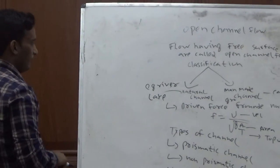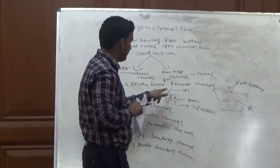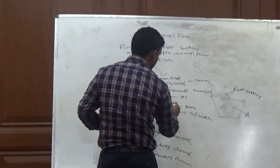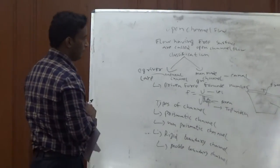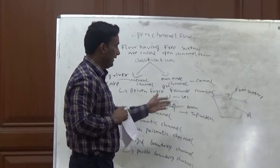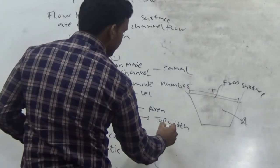The Froude number is used for classification of flow. This is represented by V over the square root of gA/T, where V is velocity of flow, A is area of cross-section of channel, and T is top width of channel.